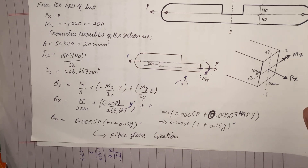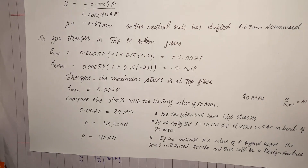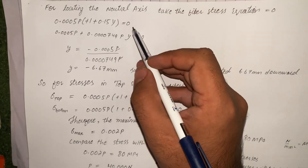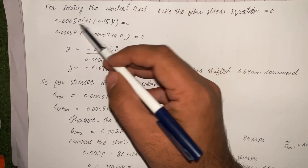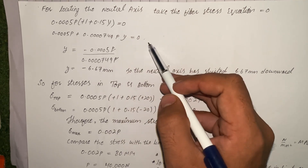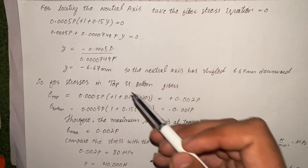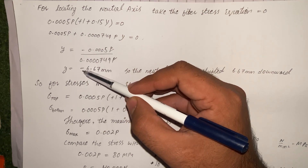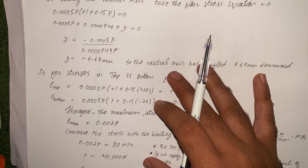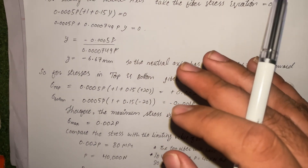To locate the neutral axis, we set the fiber stress equation equal to zero and solve for y. This tells us how much the neutral axis has shifted from the centroid. Solving gives y equals minus 6.67 mm, meaning the neutral axis has shifted downward by 6.67 mm from the centroid.